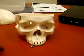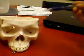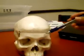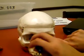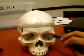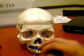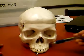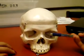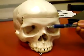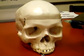Okay, this is the orbit. The orbit consists of the frontal bone, the sphenoid, the zygomatic bone, the maxilla, the lacrimal, the nasal bone, and the ethmoid bone.